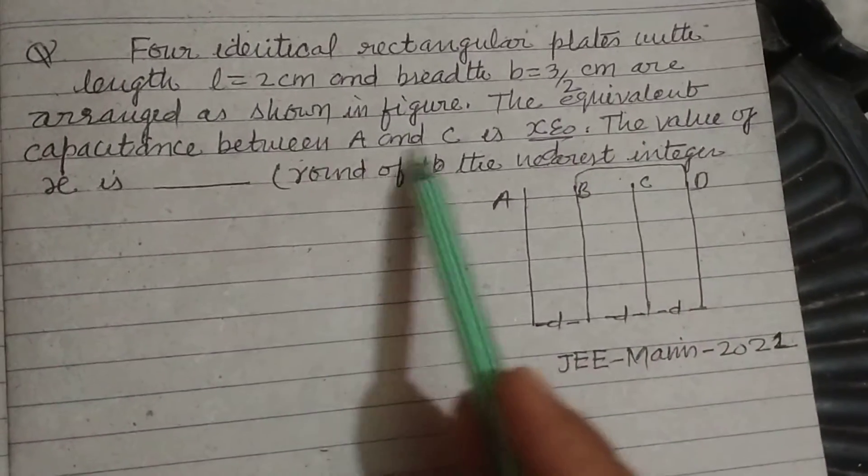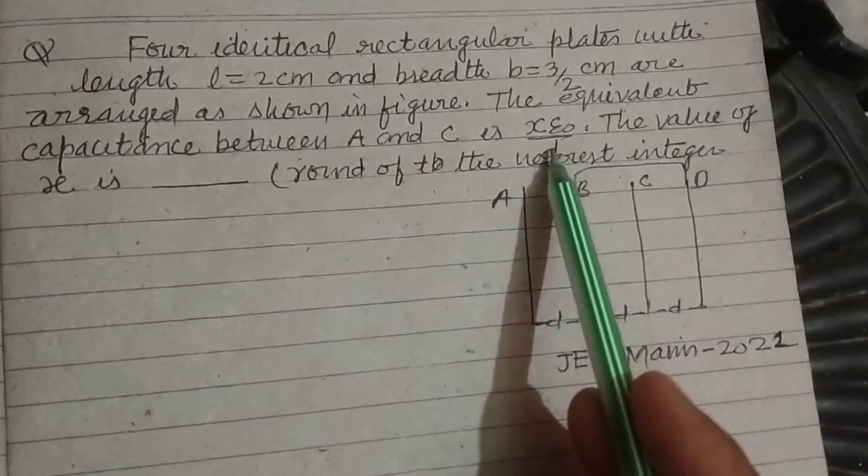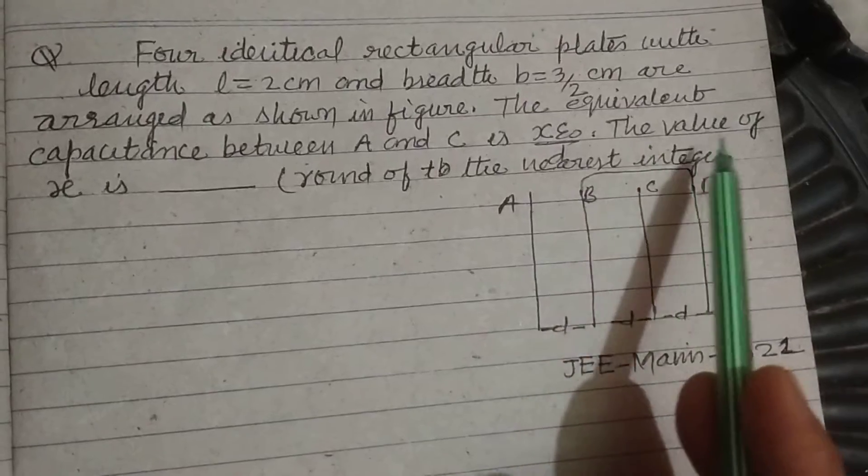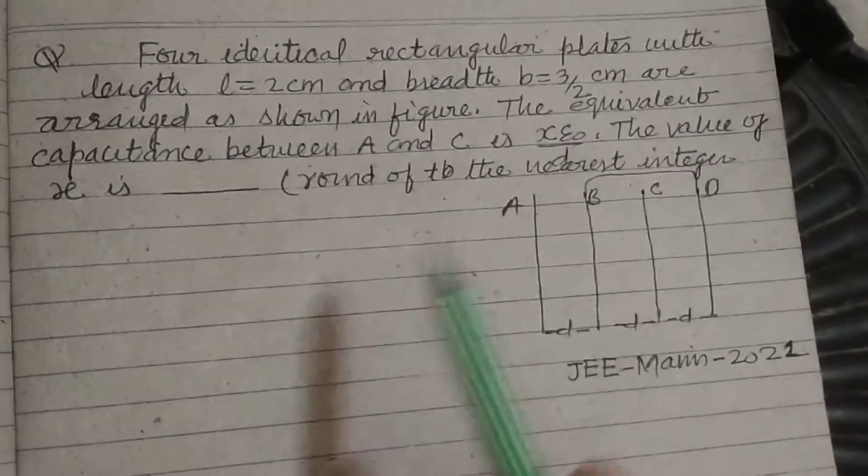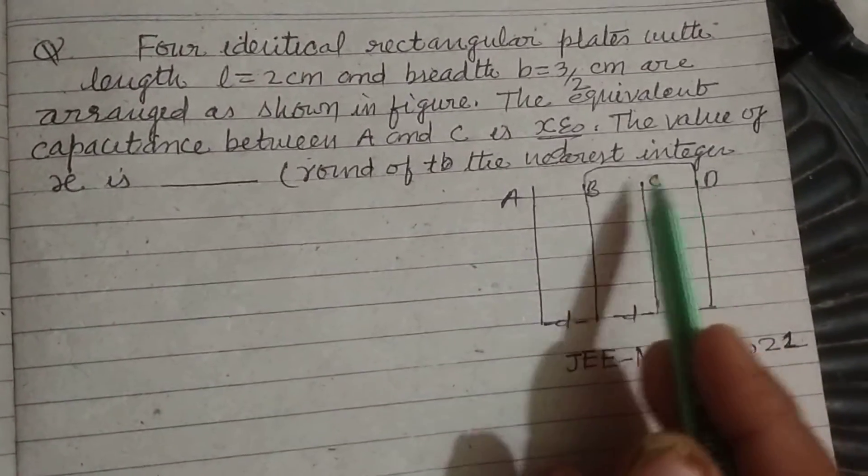The equivalent capacitance between A and C is x epsilon not upon d. The value of x is - student here B and D are connected.